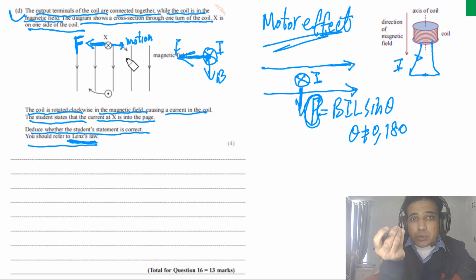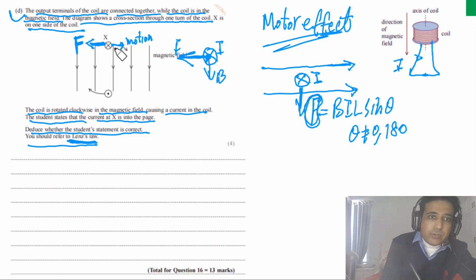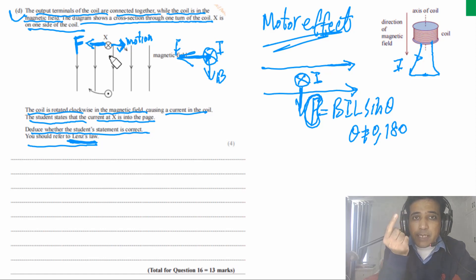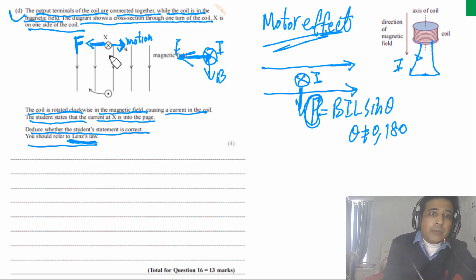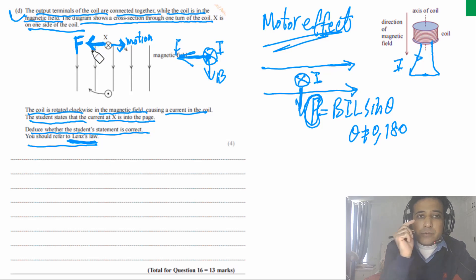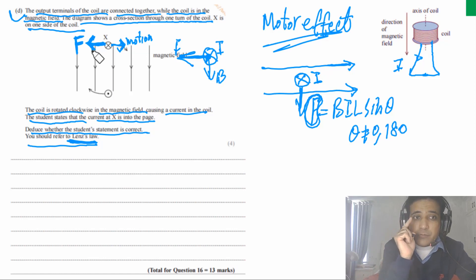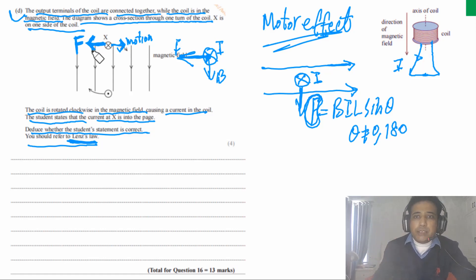The answer for this four-mark question: state that by Lenz's law, the direction of induced current opposes the cause of the current. The cause is motion, so the wire experiences a force in the opposite direction. The wire experiences a force due to interaction of the induced current and external magnetic field. As the wire rotates clockwise, the opposing force on the top wire is to the left. By Fleming's left-hand rule, the current is into the page — so the student is correct.